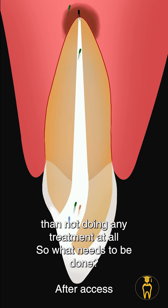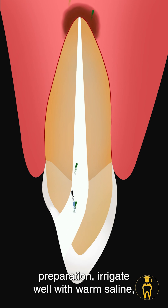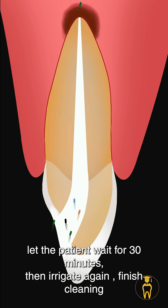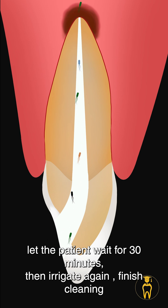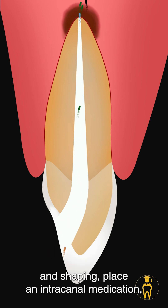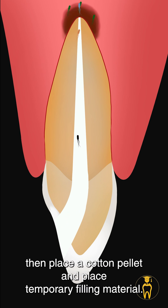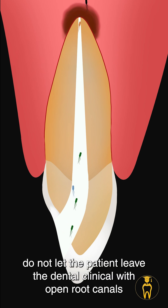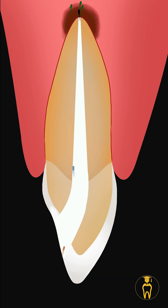So what do we need to do? After access preparation, irrigate well with warm saline. Let the patient wait for 30 minutes in the dental office, then irrigate again. Finish cleaning and shaping. Place an intracanal medication, then place a cotton pellet and a temporary filling material. Do not let the patient leave the dental clinic with open root canals.